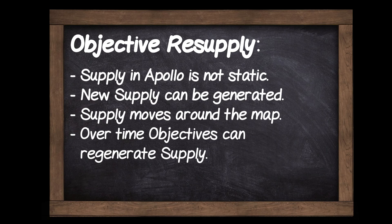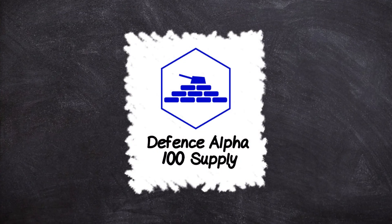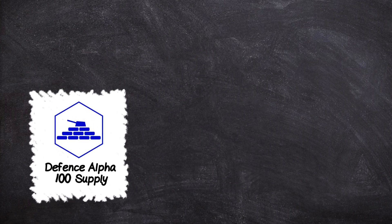Exactly how this happens is kind of complicated, so we'll start with a simplified example. Imagine we have an objective near the front line. We'll call it Defence Alpha and say it has 100 supply. Imagine Defence Alpha gets bombed by a squadron of enemy aircraft — this reduces its supply from 100 to 50. The day ends, and now Defence Alpha needs to be resupplied.